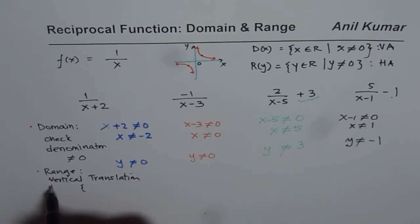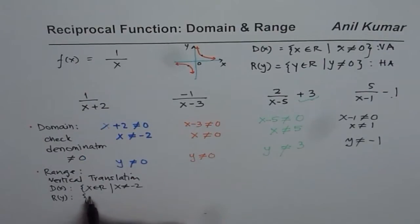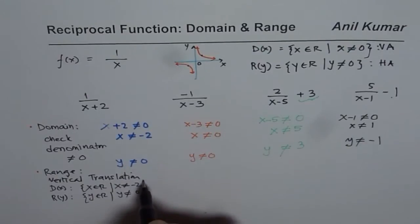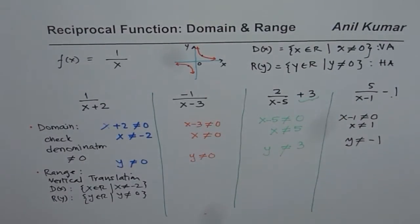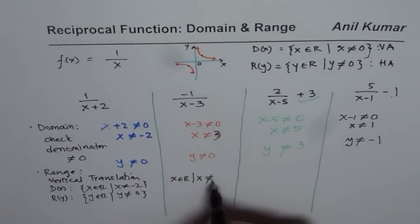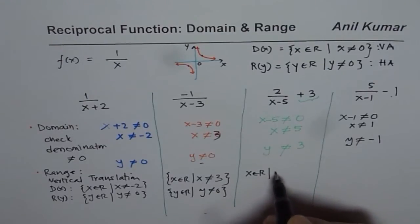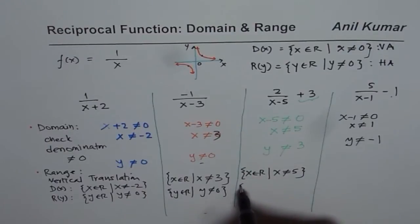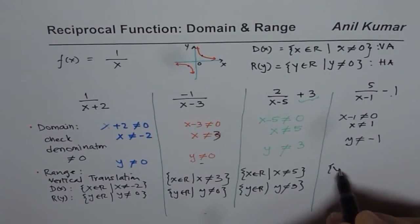Let us now write the formal domain and range for each function. First function: domain is x belongs to real numbers where x is not equal to minus 2; range is y belongs to real numbers where y is not equal to 0. Second function: x belongs to real numbers where x is not equal to 3; y belongs to real numbers where y is not equal to 0. Third function: x belongs to real numbers where x is not equal to 5; range is y belongs to real numbers where y is not equal to 3. Fourth function: x belongs to real numbers where x is not equal to 1; y is not equal to minus 1.